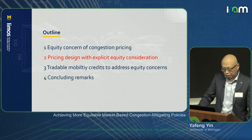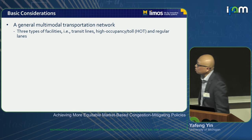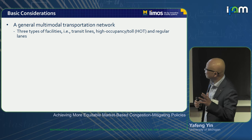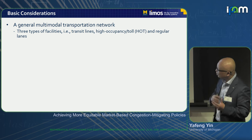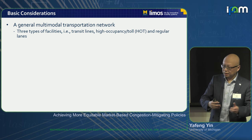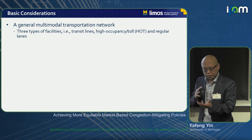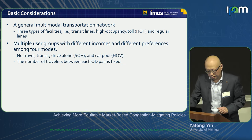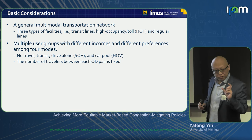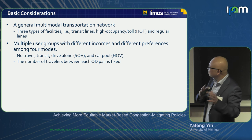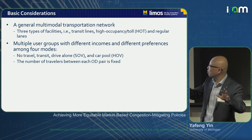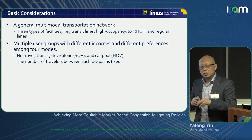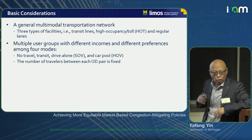Looking at the modeling framework: we consider a general multimodal network with general topology. We consider three types of facility — transit and highway. For highway, we can differentiate regular lanes where uniform pricing can be applied, or high-occupancy toll lanes where we can charge high-occupancy vehicles and single-occupancy vehicles differently. For each origin-destination pair, the number of travelers is fixed, but they differ in income and therefore have different preferences. They choose among four modes: no travel, transit, drive alone, and carpool. Considering no travel as an option means we model elastic travel demand.